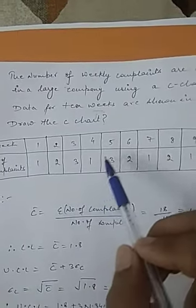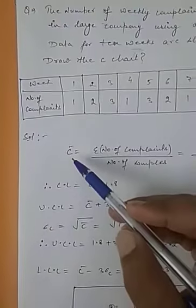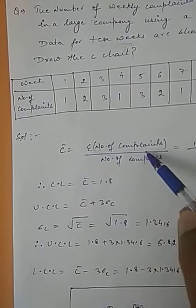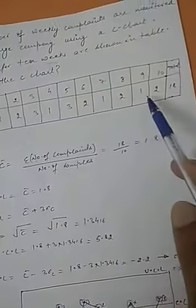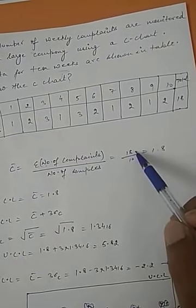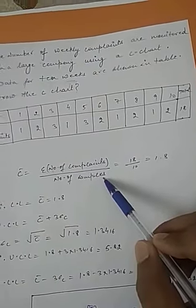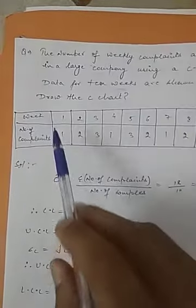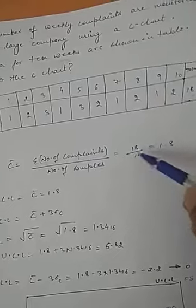For week one, number of complaints is 1; for week two it is 2; for week three it is 3, and so on. First of all, we will calculate C-bar. C-bar is the summation of number of complaints, which is 18, divided by number of weeks, which is 10. So 18 divided by 10 equals 1.8.